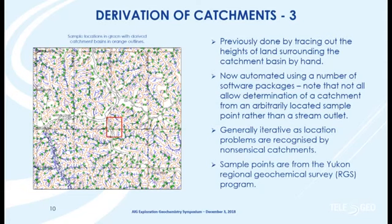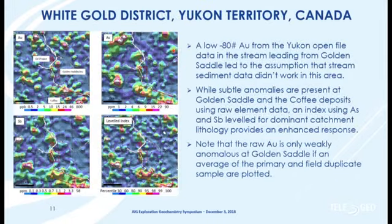Once you're satisfied that you've got your samples in the best locations, you generate a catchment for each one. This used to be done manually, where people would trace around the heights of land for a catchment. Now there's automated software — different packages have different pluses or minuses. One of the best commercially available is the hydrology module in Discover, working with MapInfo, because it actually generates the catchment for prescribed sample location points. I'm now showing gridded images for that large area that includes the White Gold District.